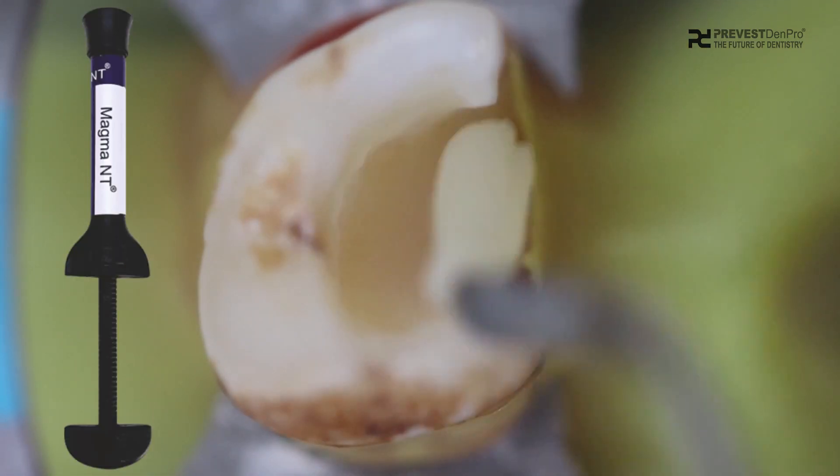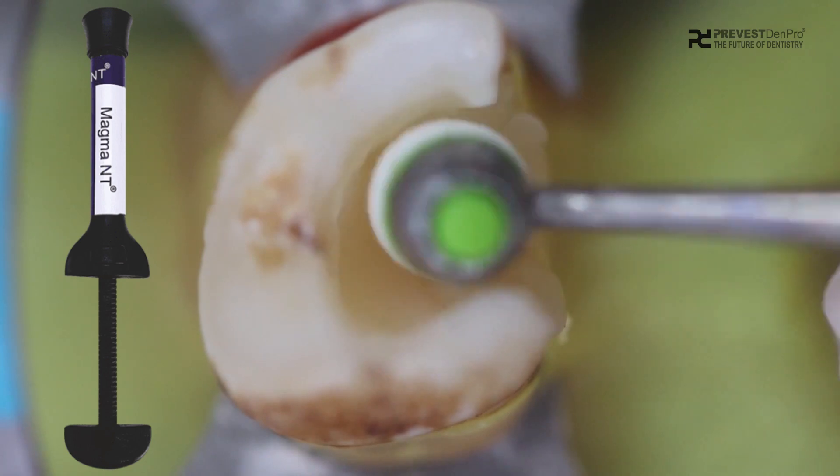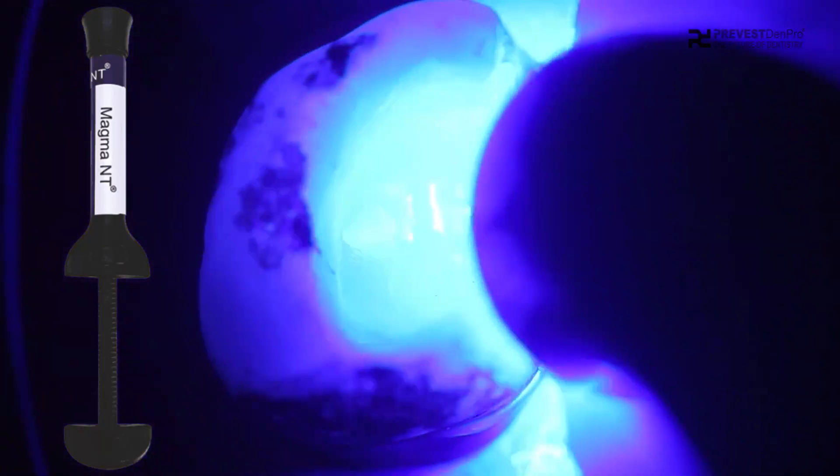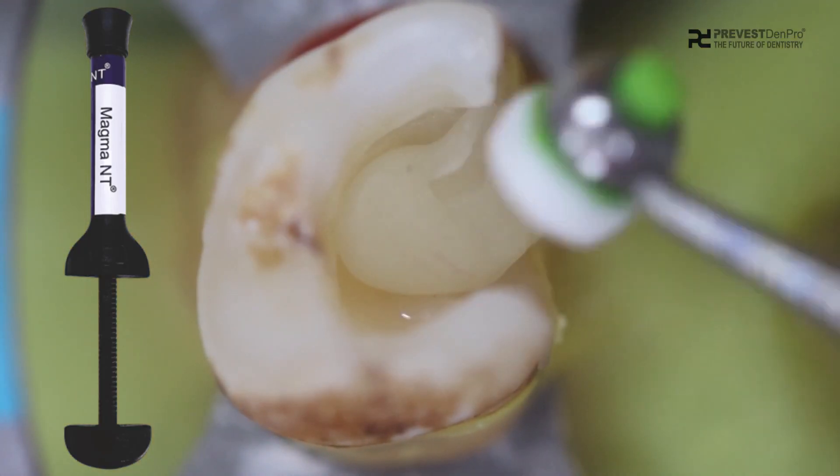Now we will be using nano-ceramic universal restorative, Magma Entry, which is a visible light-curing composite. This Magma Entry is a low-shrinkage composite that can be easily molded into desired contours due to its high viscosity.